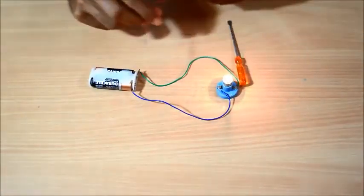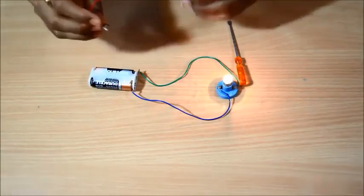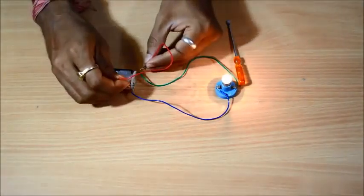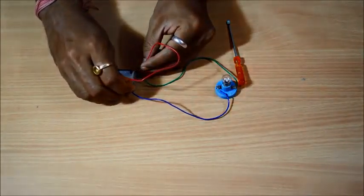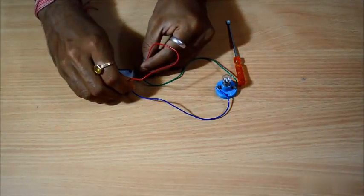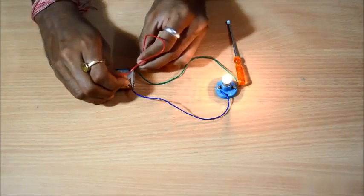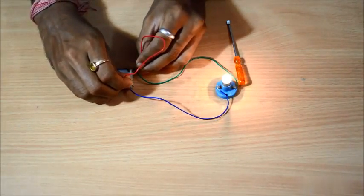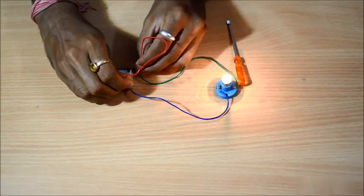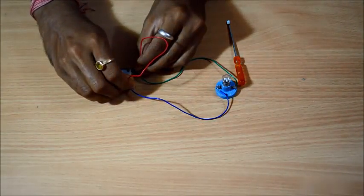See it's glowing. Now what I'll do is I'll connect this connecting wire between the two ends of the battery holder. You see the bulb is not glowing. The moment I remove it it again starts glowing. The moment I connect it back the two ends of the connecting wire it stops glowing.